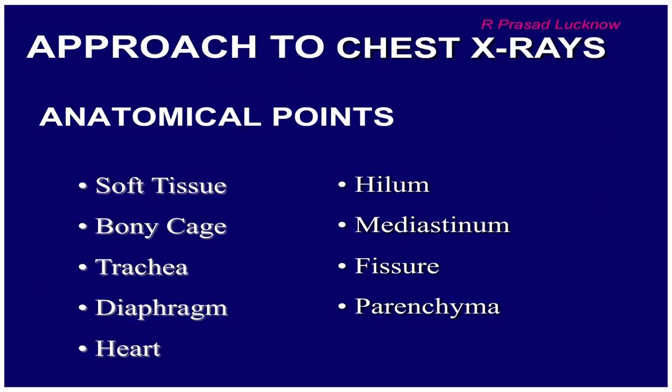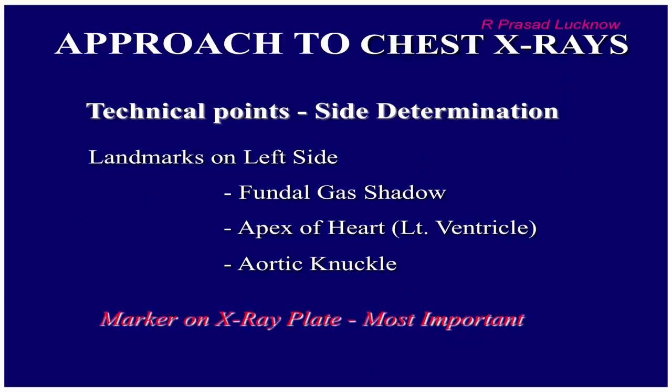Regarding anatomical points, you develop a system covering everything visible in the chest X-ray: start from soft tissue, go to the bony cage, then trachea, diaphragm, heart, hilum, mediastinum, fissures if visible, and finally the lung parenchyma. The main difference between global and systematic approaches is that in the systematic approach you see the lung parenchyma last, whereas globally you look at it first. Let us start with the technical points — how the side is decided.